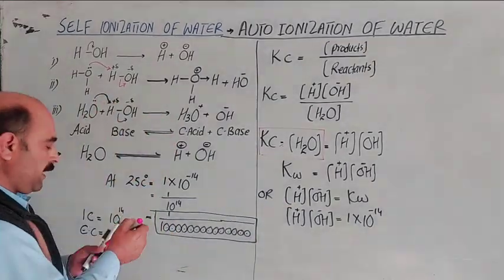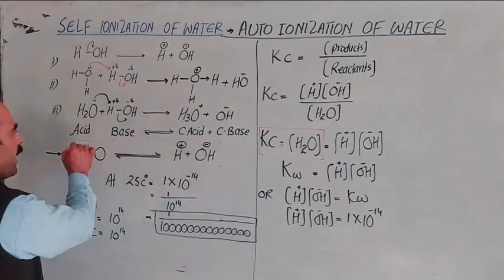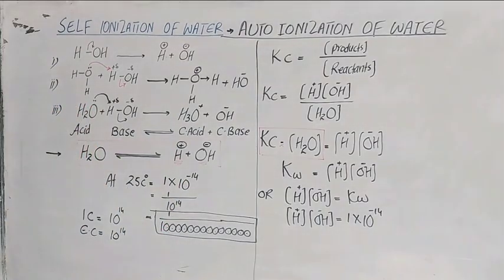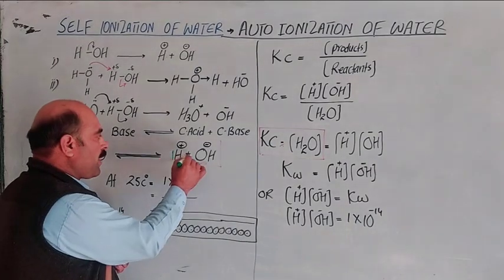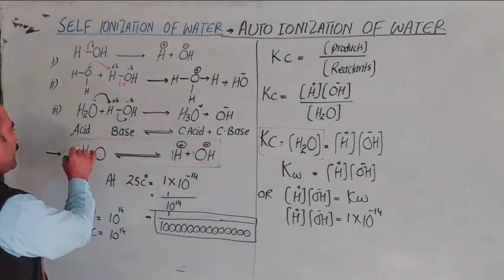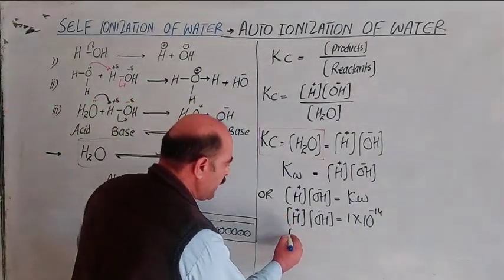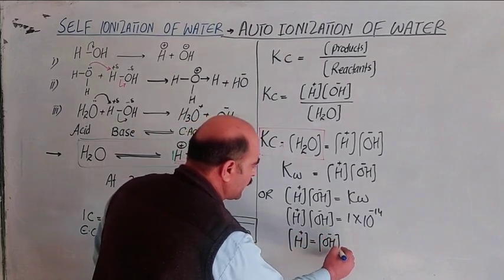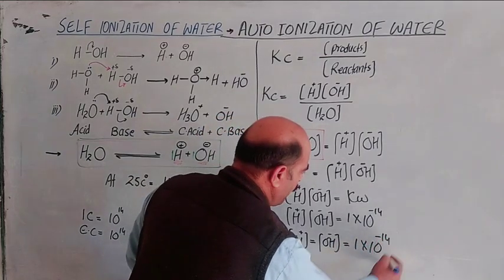If one water molecule ionizes, it provides one hydrogen ion and one hydroxide ion. So the concentration of hydrogen ion equals the concentration of hydroxide ion. Since their product equals 1 × 10⁻¹⁴, and the concentrations are equal, each is equal to 1 × 10⁻⁷ moles per decimetre cube.